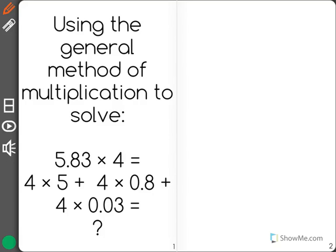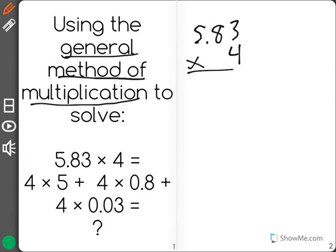This problem says, using the general method of multiplication to solve 5.83 times 4 equals. What they've done is they've split it up. 5.83 times 4 equals.